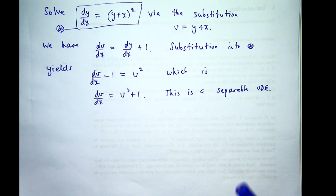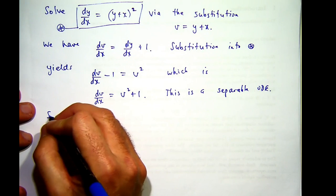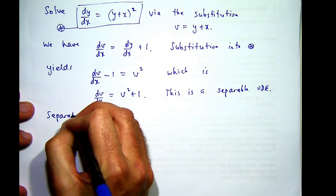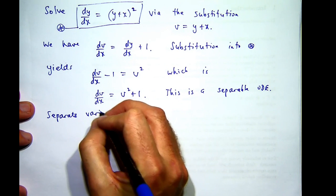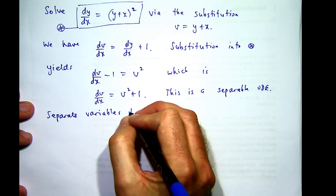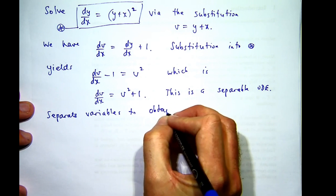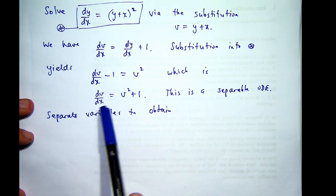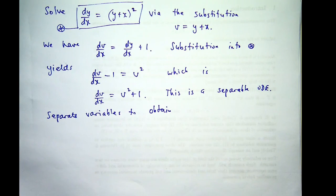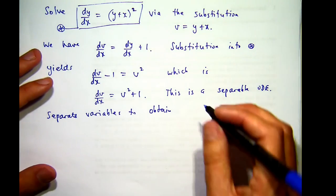So to solve a separable ODE, what we do is we separate the variables via multiplication or division, and then integrate both sides. So essentially, I'm going to separate the dv and the dx, and I'll get something like the following.